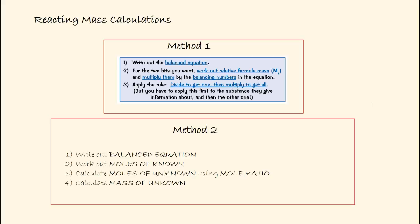Method two, which is my preferred method because it works for all mole calculations including solutions and gases, is to write out the balanced equation, work out the moles of the known substance, then calculate the moles of the unknown substance using the mole ratio, and finally calculate the mass of the unknown substance.